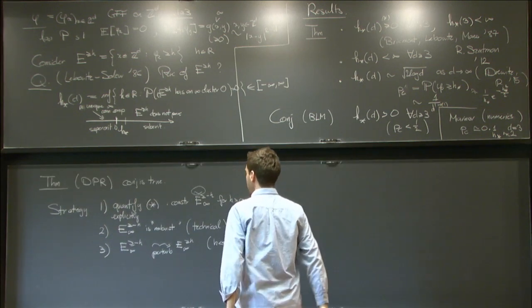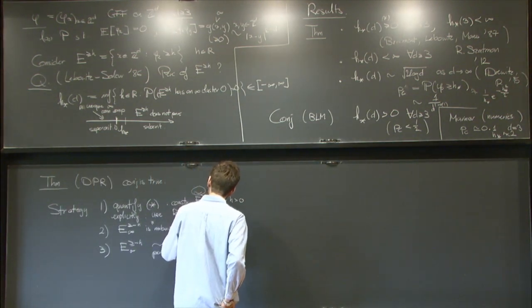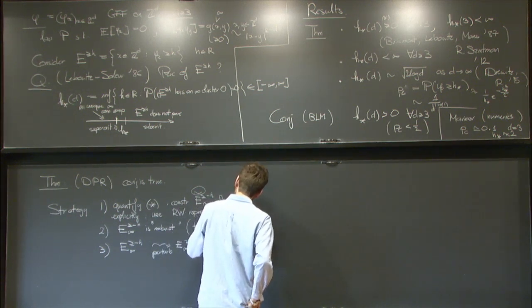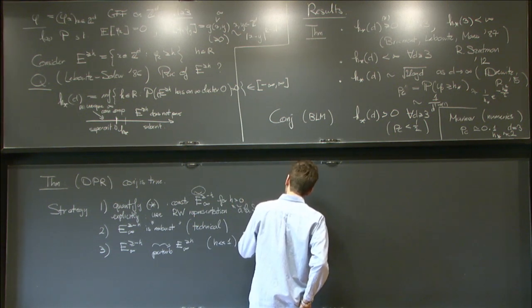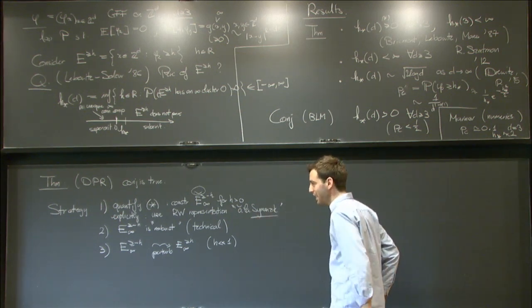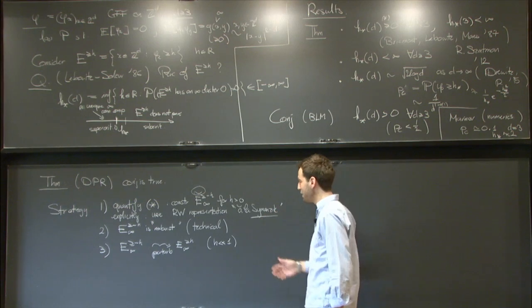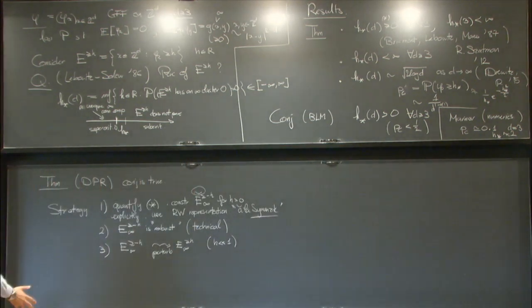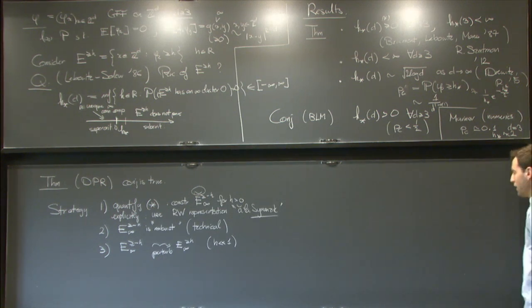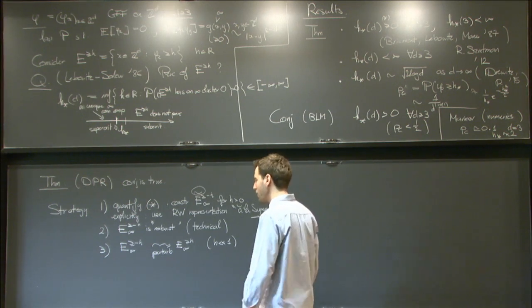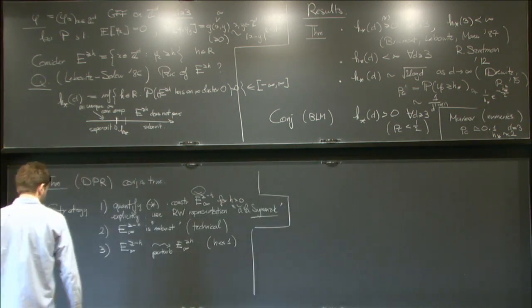For the first step — building this cluster — we use what I call a random walk representation: a link between the free field and certain random walks. This is in the heritage of things that Le Jan and others would have thought about. There are celebrated papers that have used such random walk representations very successfully. Among the ones closest to what I will present, you should think about the Brydges-Spencer paper, and also later Dynkin and Le Jan and other probabilists.